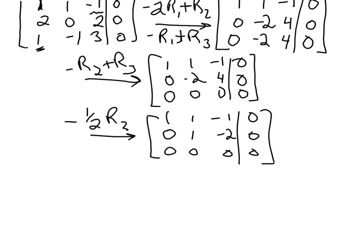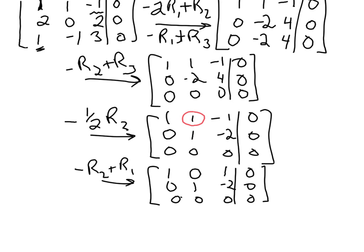And now, last thing, I'd like to get a 0 in this entry here. So I'm going to do negative row 2 plus row 1. So that will give me 0 here, and then positive 2 plus that negative 1, so positive 1 now.